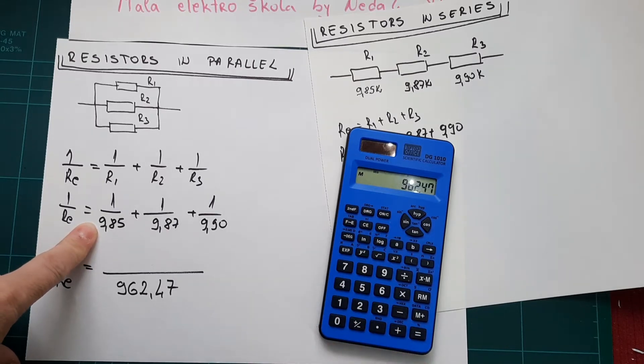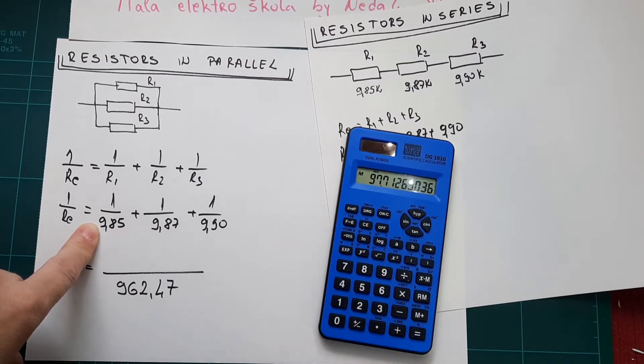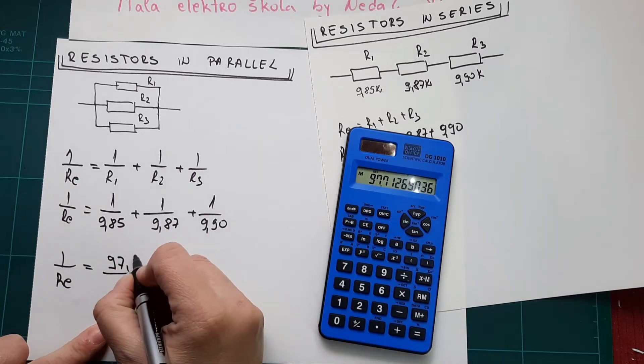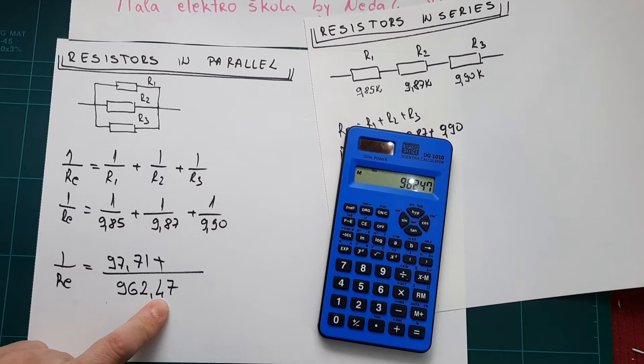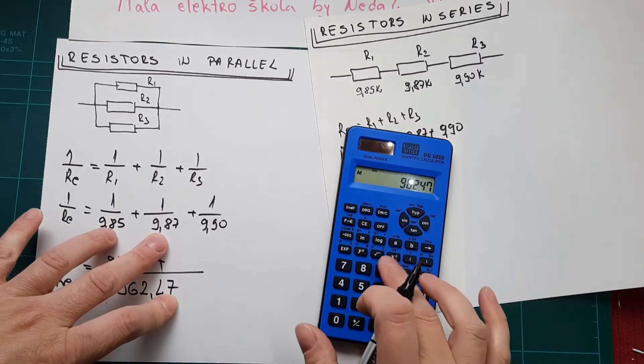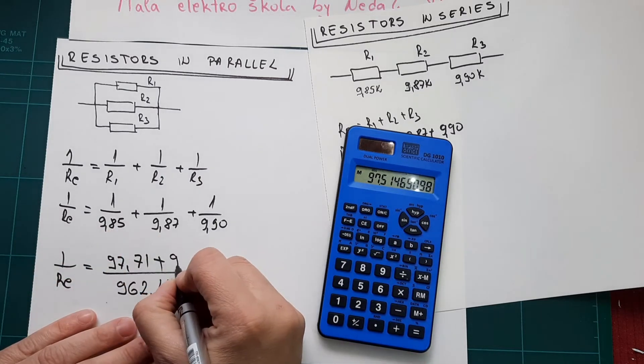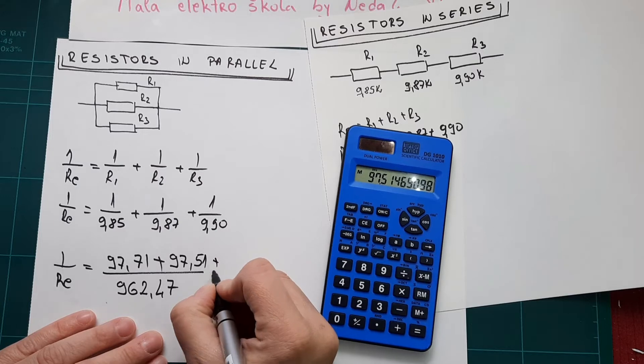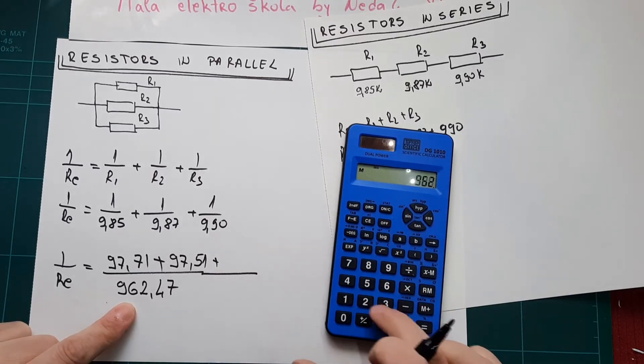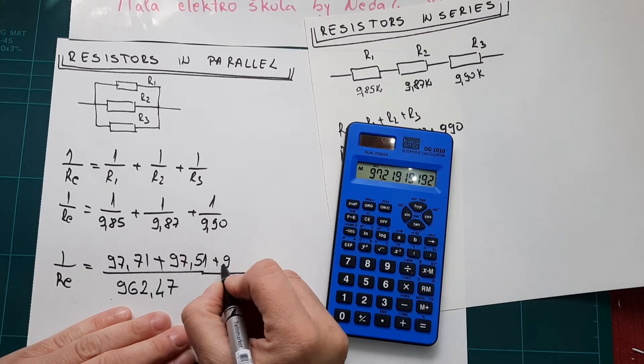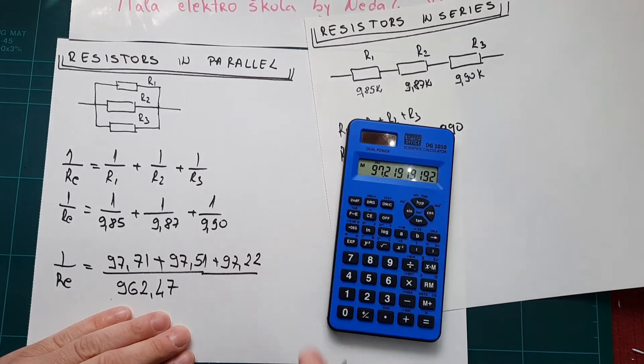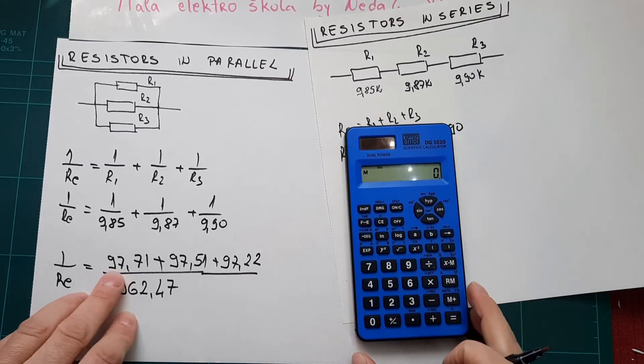962.47 divided by 9.85 is 97.71. Again, 962.47 divided by 9.87 is 97.51. And 962.47 divided by 9.9 is 97.22. Let's add these.